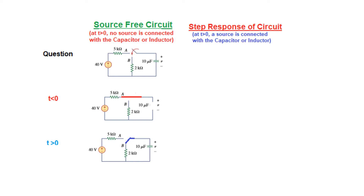In this example, the switch is moving from A to B at t = 0. So before t = 0, it is connected to A. Since a DC source has been connected for a long time, the capacitor is fully charged and behaves like an open circuit. After t = 0, the switch moves to B, and now the capacitor circuit does not have any source connected to it. The source is disconnected, and therefore this is another example of a source-free circuit.